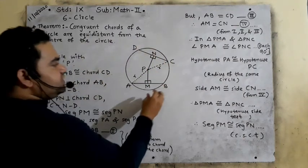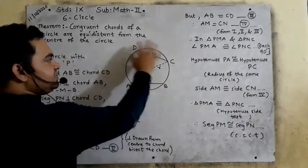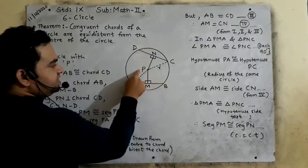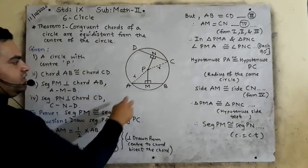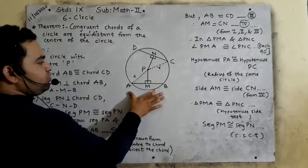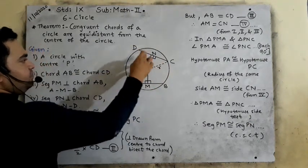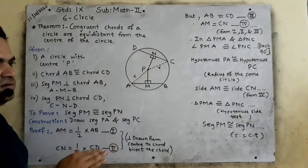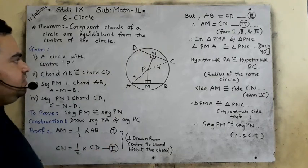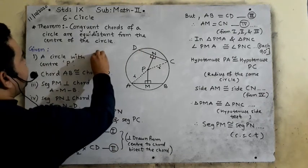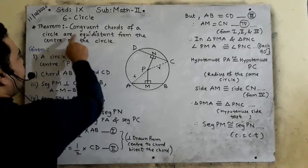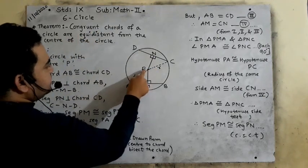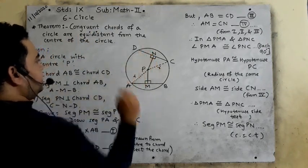Please observe this figure for just one minute. This is a circle; point P is the center of the circle. AB is a chord and CD is also a chord, but chord AB is equal to chord CD. Both chords are congruent. We have to prove that congruent chords of a circle are equidistant, meaning PM is equal to PN.